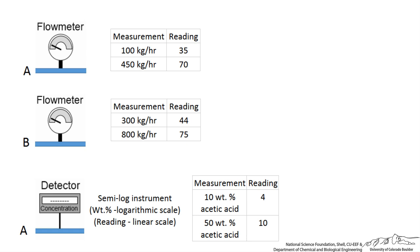Your job is to determine a relationship for the variable of interest, in this case flow rate and composition, as a function of the meter reading knowing that the flow meters have linear calibration curves.